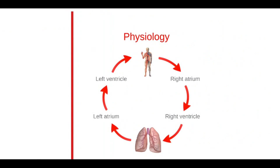The right atrium receives blood from the body and sends it to the right ventricle to be sent to the lungs for oxygenation. The left atrium receives the newly oxygenated blood and sends it to the left ventricle to be sent throughout the rest of the body. The valves between the chambers are meant to prevent reverse blood flow.